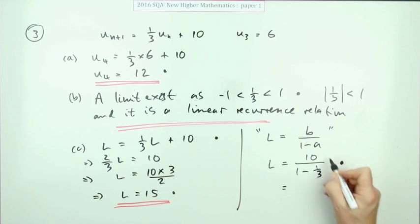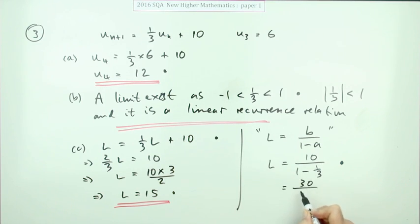And then the second mark coming from just doing the arithmetic whichever way you want it. Take away a third, giving you two thirds, and then dividing by two thirds or just saying I'll simplify that complex fraction by multiplying everything by three. So I've got 30 over three, three minus one, 30 over two, which is 15. And there's the second mark.